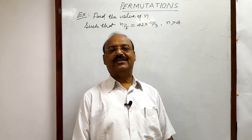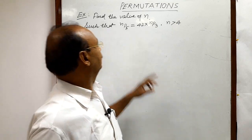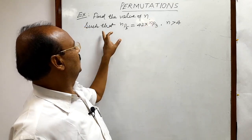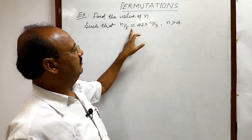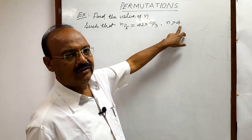Welcome students, we are going to discuss a very interesting question from the topic permutation. Here question is, find the value of N such that Np5 is equal to 42 into Np3, where N is greater than 4.